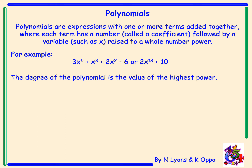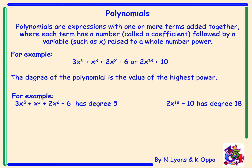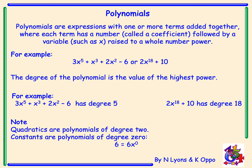The degree of the polynomial is the value of the highest power. For our first example, this has degree 5, and our second example has degree 18. It is worth noting that quadratics are polynomials of degree 2, and constants — for example 6 — are equal to 6x⁰, so constants are polynomials of degree 0.